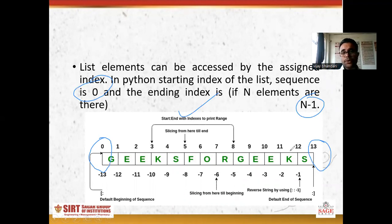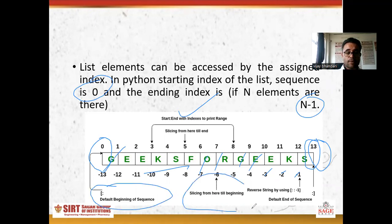If you see, if you want to access last elements, you can just use minus 1. So the index will be starting from minus 1, minus 2, minus 3, minus 4, minus 5, minus 6, minus 7, minus 8 and up to minus 13. So if you want to reverse the list, you can perform very easily here. You have to do list of minus 4 and it will give you the result. So here, by default, the beginning of the sequence, slicing from here till beginning, reverse the system by using these operations. You can perform double colon minus 1. This kind of operations you can perform very easily here.